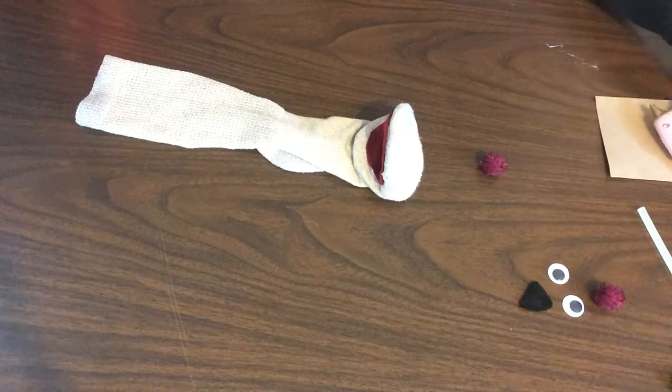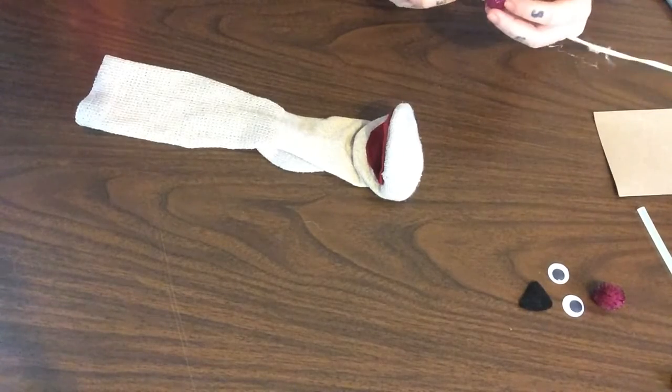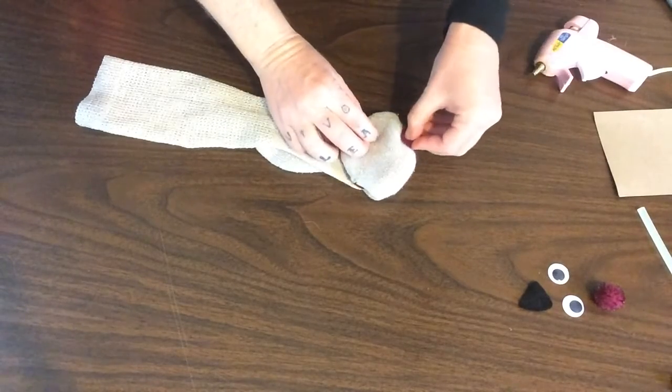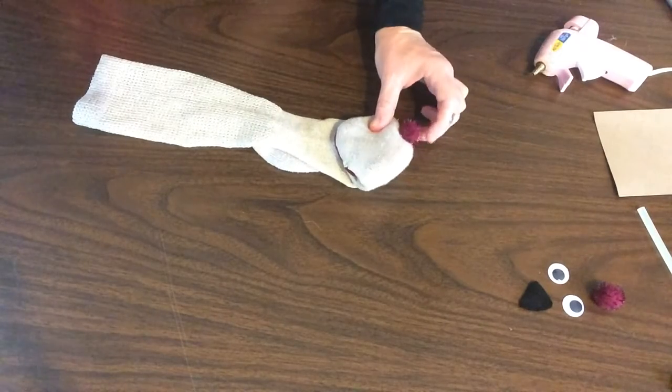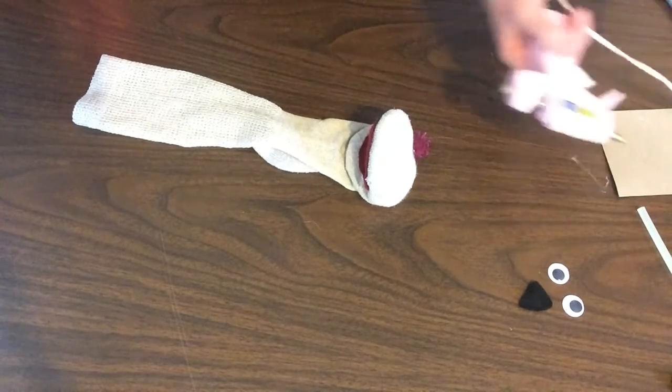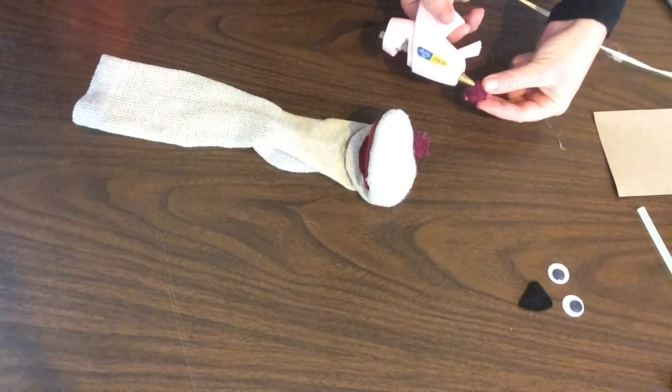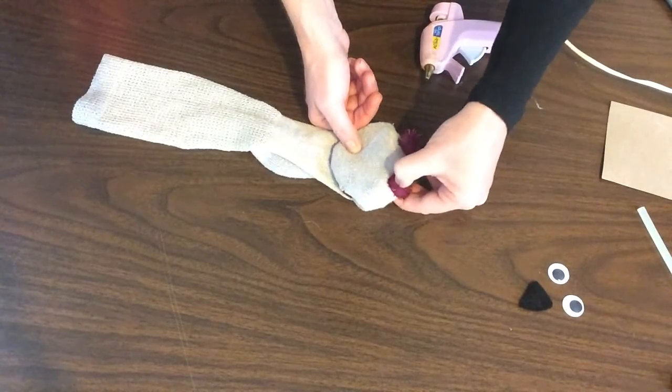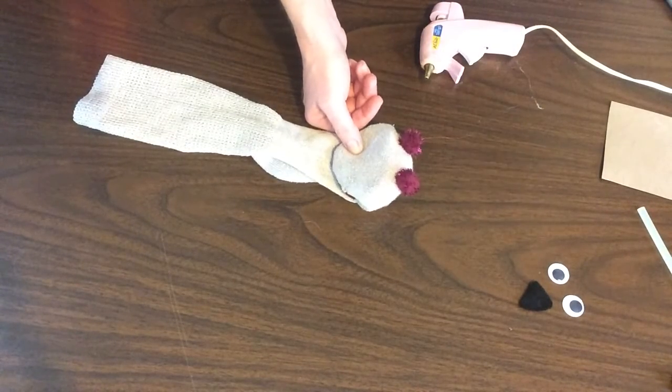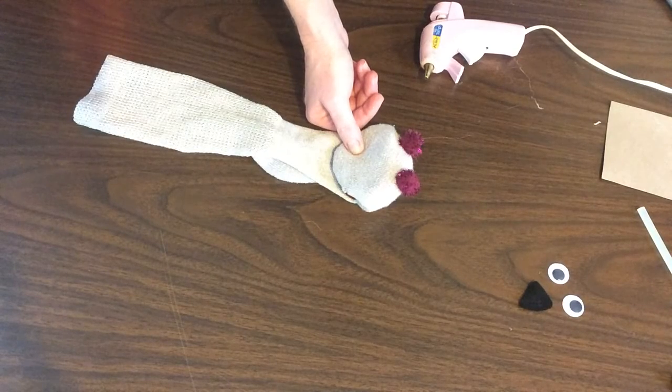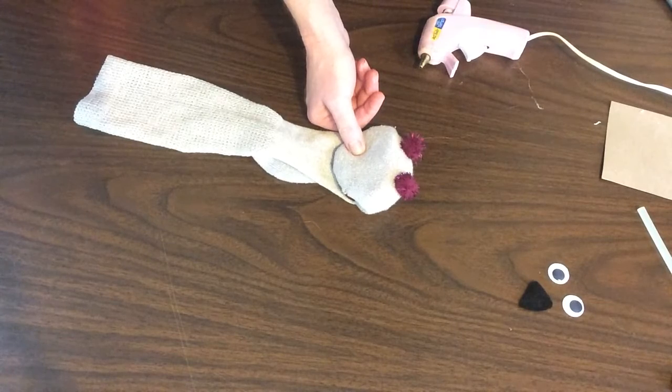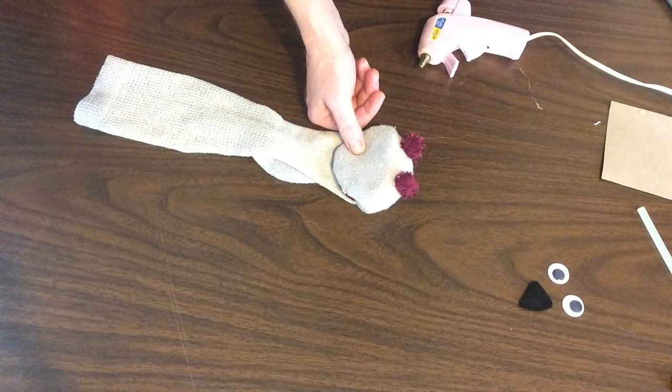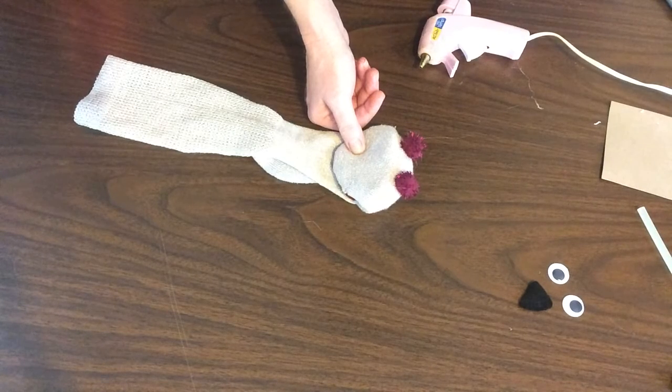It's time to glue our eyes on. We're going to take our pom-poms, glue them right on the top. Take your other pom-pom and glue it right on the top. So let that dry and then you want to glue on your googly eyes. I like to give that a second.